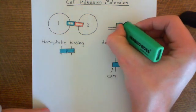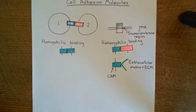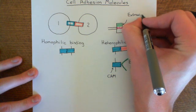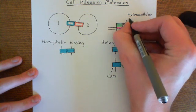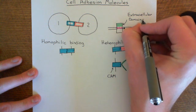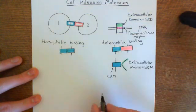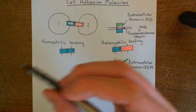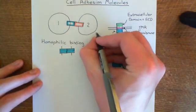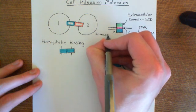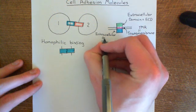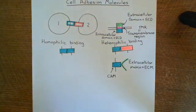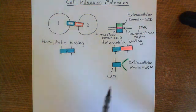Then you have the extracellular domain, highlighted in green. This is the extracellular domain, often abbreviated to ECD — E for extra, C for cellular, and D for domain. And then this final portion on the inside of the cell, highlighted in blue, is the intracellular domain, abbreviated to ICD — I for intra, C for cellular, and D for domain. The extracellular domain is the portion that will interact either with another extracellular domain of another cell adhesion molecule, or with the extracellular matrix protein.